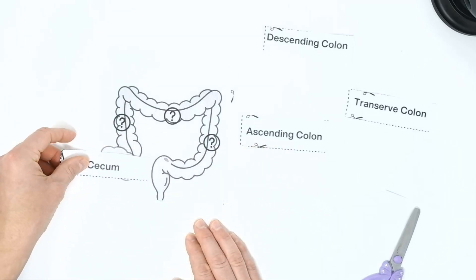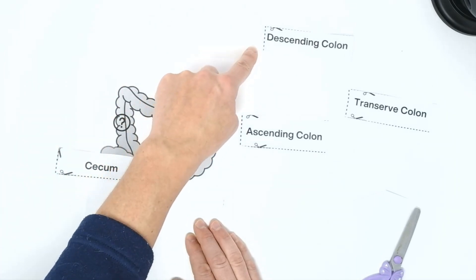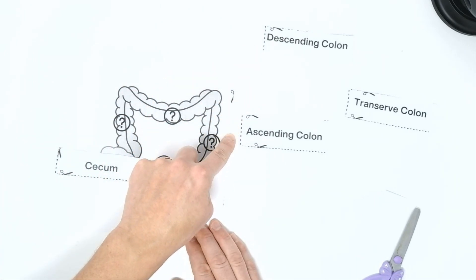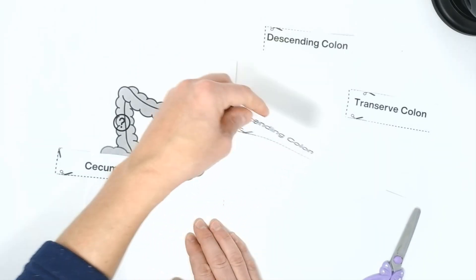After it goes from the cecum, it's going to go up. This portion of the large intestine is going to go up. Is it the descending colon, ascending colon, or transverse colon? It's going to be the ascending colon.